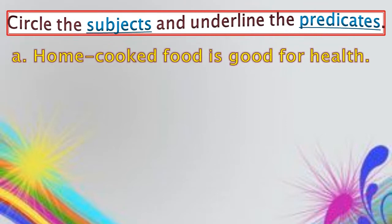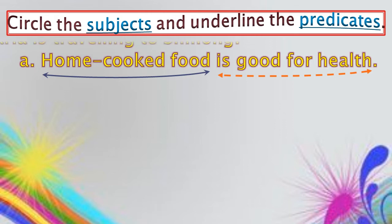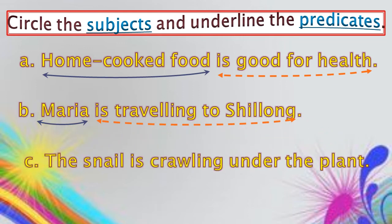Circle the subjects and underline the predicates. First: 'Home cooked food is good for health.' Here, 'home cooked food' is the subject part. 'Is good for health' is the predicate. Next: 'Maria is traveling to Shiloh.' Here, 'Maria' is the subject part. 'Is traveling to Shiloh' is the predicate part. Next: 'The snail is traveling under the plant.' Here, 'the snail' is the subject part. 'Is traveling under the plant' is the predicate part.